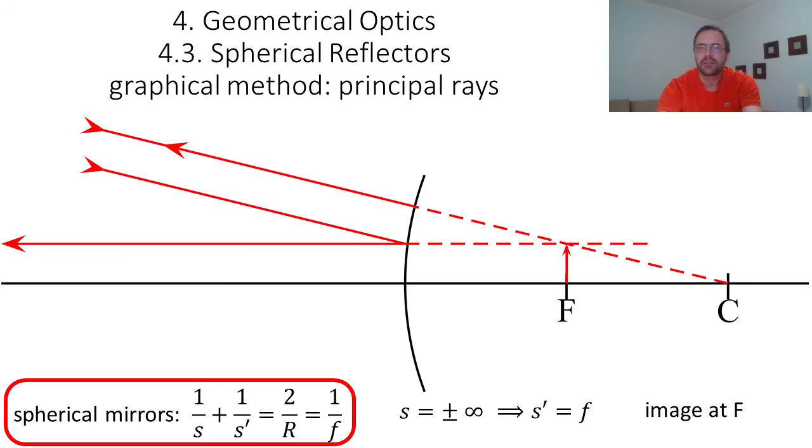Of course, you could also find this result not graphically but from the formula. If the object is at infinity, then we obtain that s' will be equal to f, and so the image will be located at the focal point f.